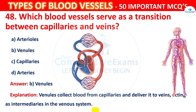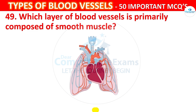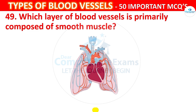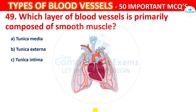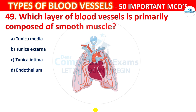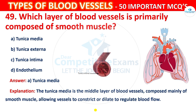Question 49. Which layer of a blood vessel is primarily composed of smooth muscle? Options: Tunica media, Tunica externa, Tunica intima, or Endothelium. The correct answer is A, Tunica media. The Tunica media is the middle layer of blood vessels, composed mainly of smooth muscle, allowing vessels to constrict and dilate to regulate blood flow.